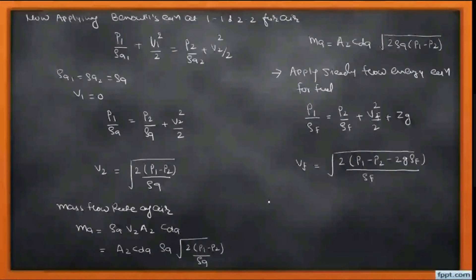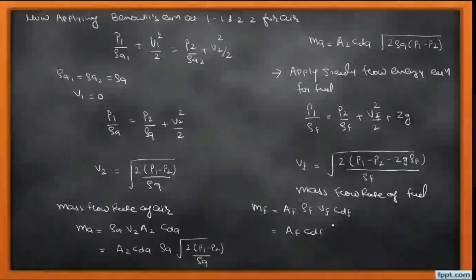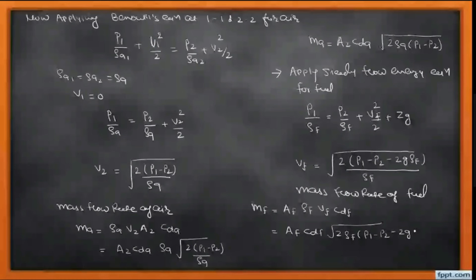Now we calculate the mass flow rate of fuel, which is indicated by MF, which equals area of the nozzle times density of fuel times velocity of fuel times CDF. So we get AF · CDF · ρF multiplied with square root of 2(P1 - P2 - Z·g·ρF). So this is our expression for mass flow rate of fuel.